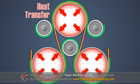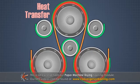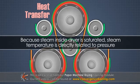The heat energy from the condensing steam is then transferred by conduction through the dryer can's cast iron shell to the sheet. Because the steam inside the dryer is saturated, the steam temperature is directly related to the steam pressure.